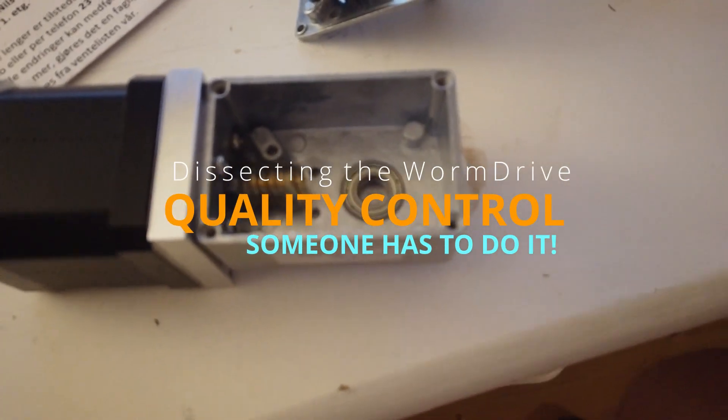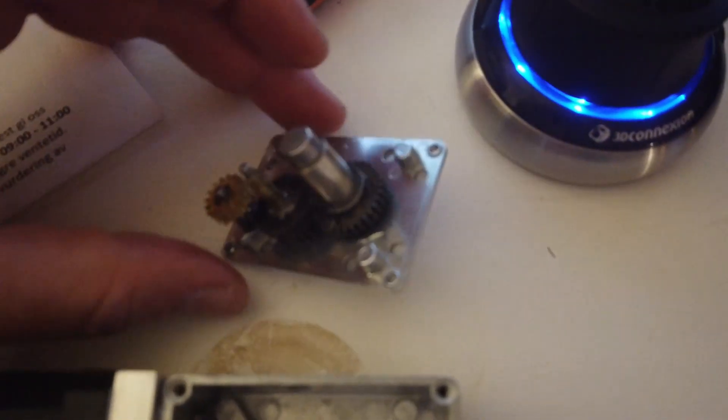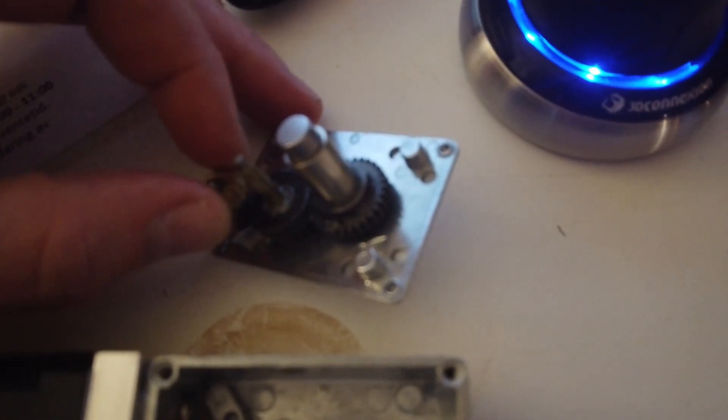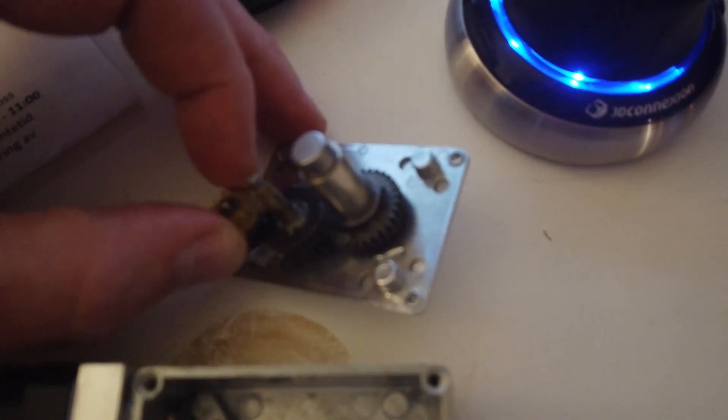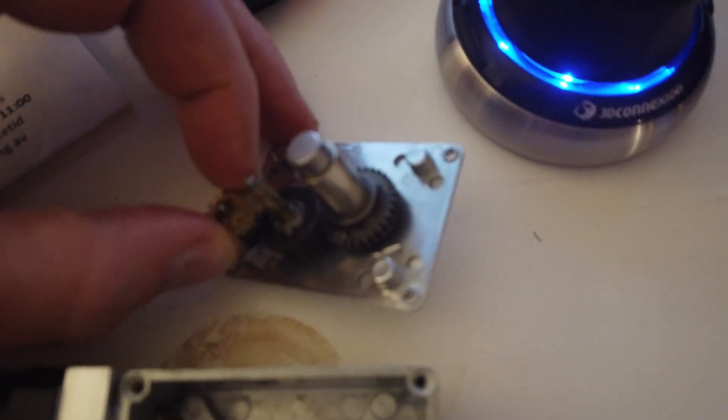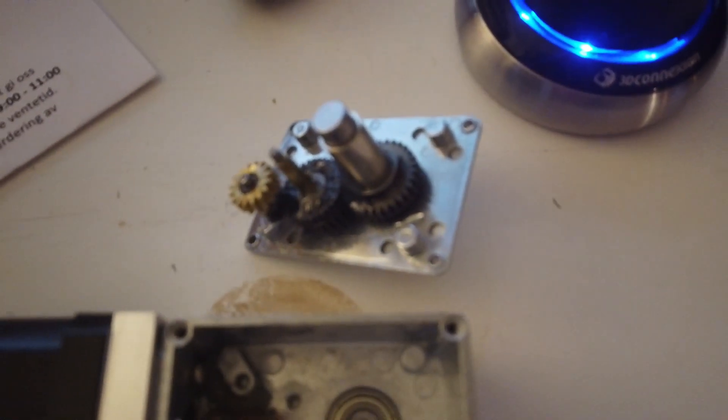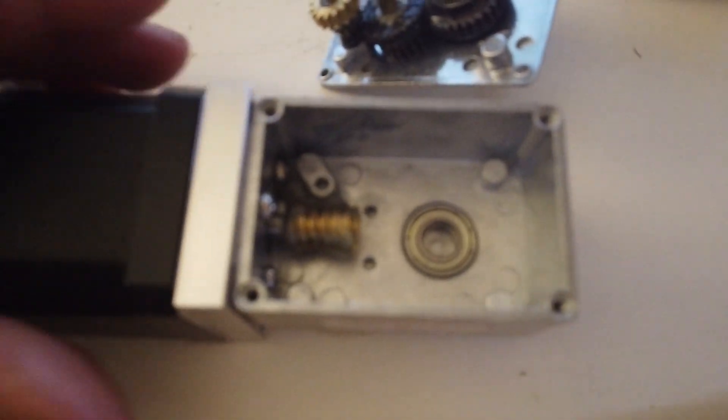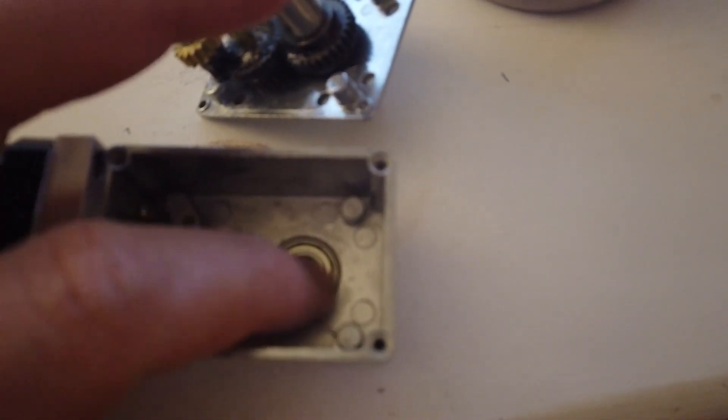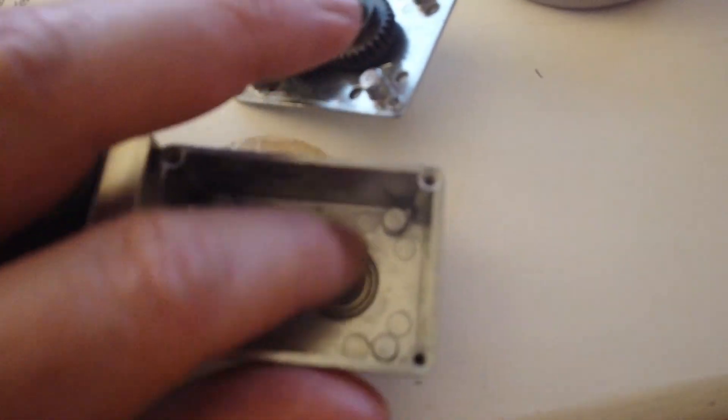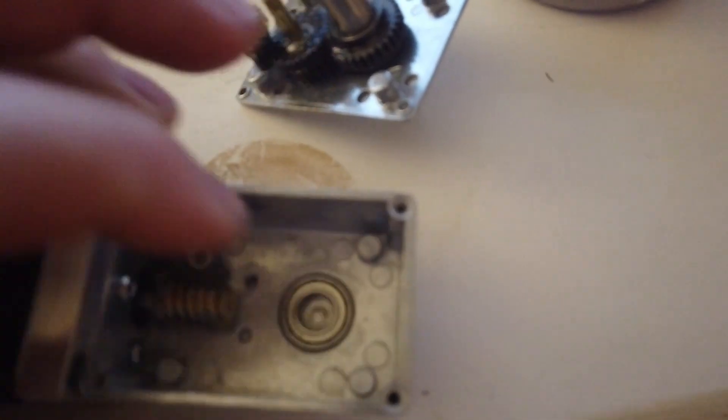So Vikings, this is the Bringsmart Worm Gear. Everything seems to be tight in terms of tolerances, as far as I can tell. There's only so much I can feel with my bare hands. They have some decent grease here. Actually, I thought maybe there was no grease inside, but yeah.